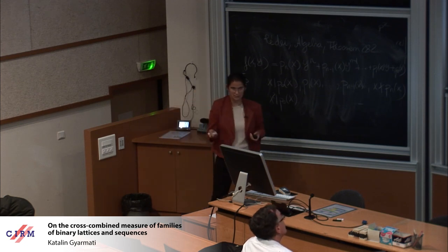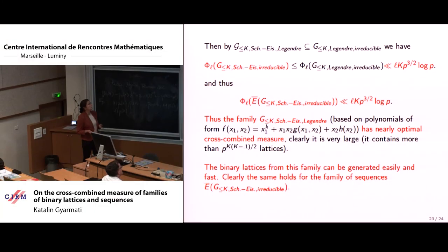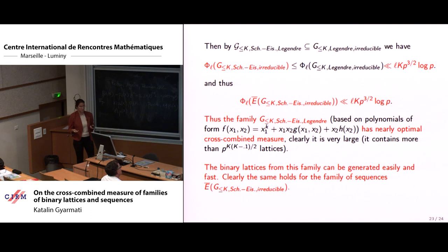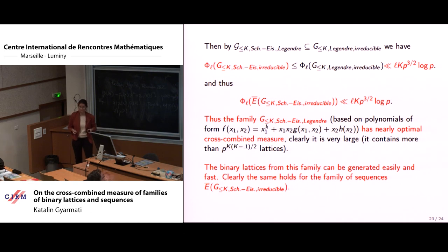Using these two-variable irreducible polynomials, we obtained a good construction of binary lattices with nearly optimal cross-combined measures, and from this we can get a good family of sequences with nearly optimal cross-combined measures. That was all I wanted to say — thank you for your attention.